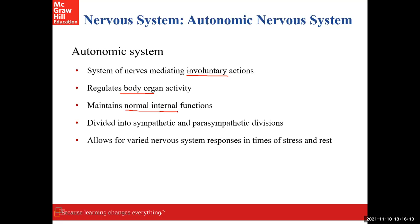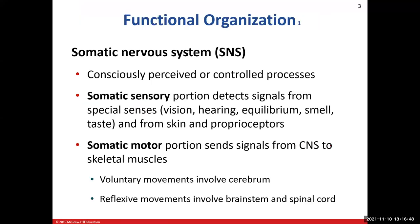We break down the autonomic nervous system into two parts: the sympathetic division and the parasympathetic division. The sympathetic division is like fight or flight — emergency and exercise. The parasympathetic is rest and digest — what happens after you eat a big meal or when you're trying to recover from a workout. We're going to see which parts relate to stress and which parts relate to resting.